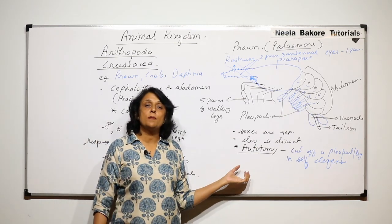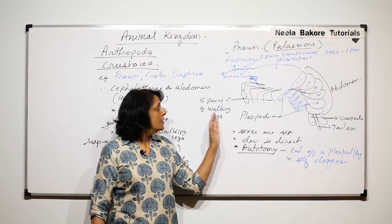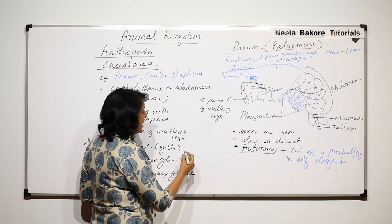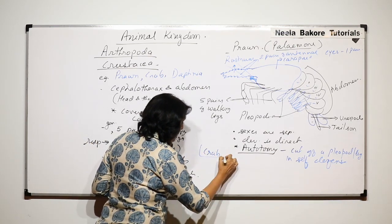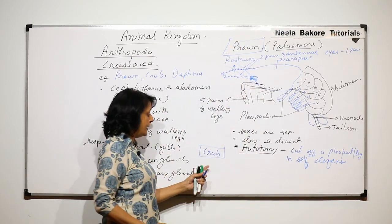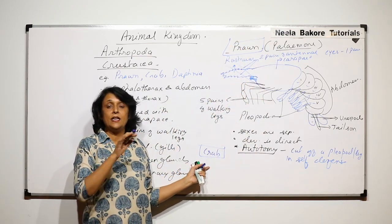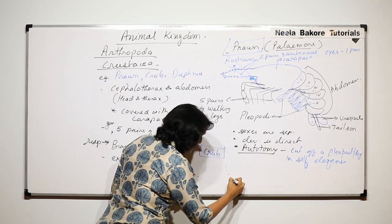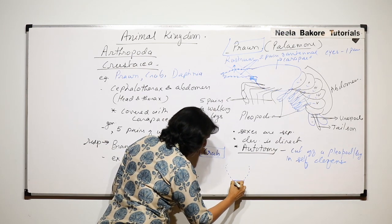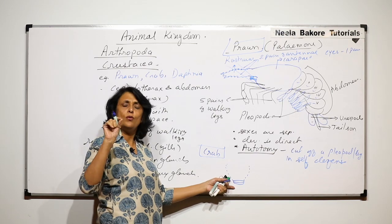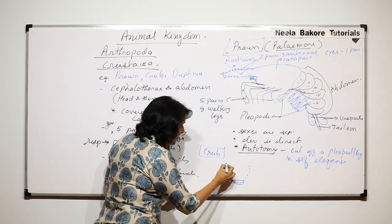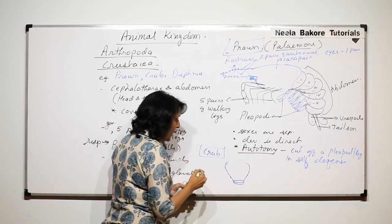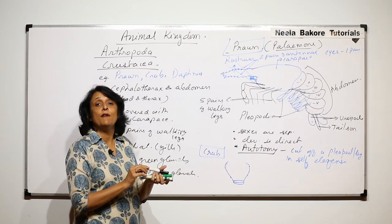Prawns are of economic importance because they are edible. The second example is crab. In crabs, the carapace is very large. The body has cephalothorax and abdomen, but the abdominal region is only a small, highly reduced part at the end, while the cephalothorax is very, very well developed.